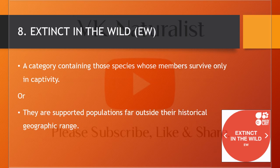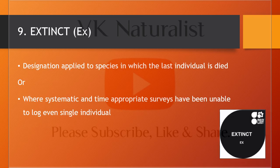Number eight is Extinct in the Wild, or EW. This category includes those species which are extinct in the wild but survive in captivity. Number nine and last is Extinct, or EX — this category is applied to species of which the last individual has died, and systematic surveys have failed to record even a single individual of the species.